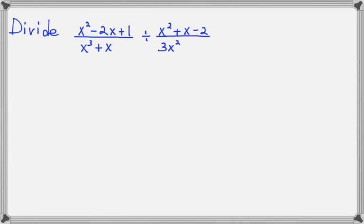Let's divide x squared minus 2x plus 1 over x cubed plus x, divided by x squared plus x minus 2 over 3x squared plus 3.